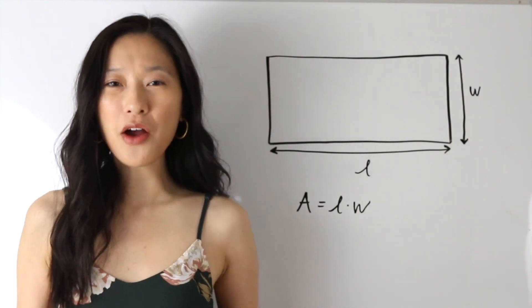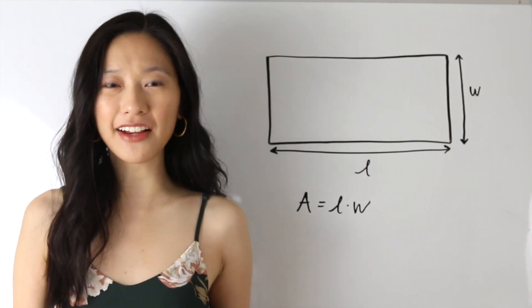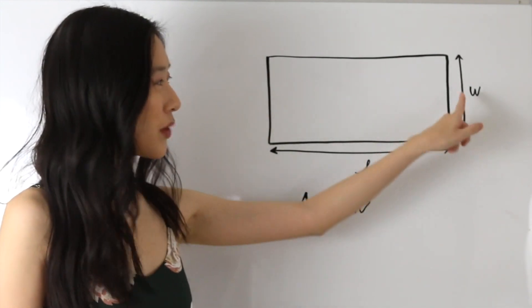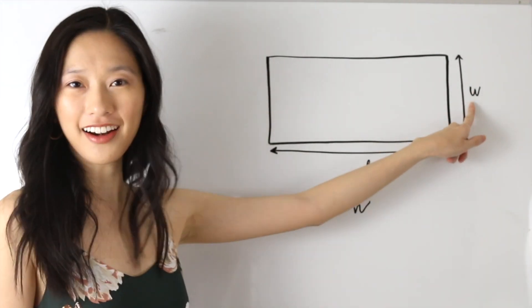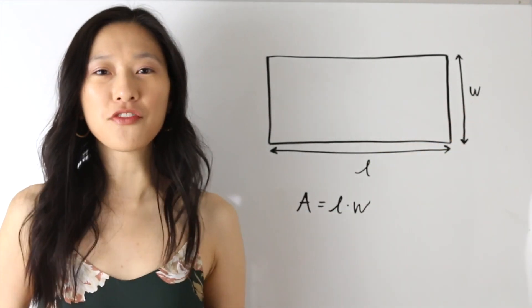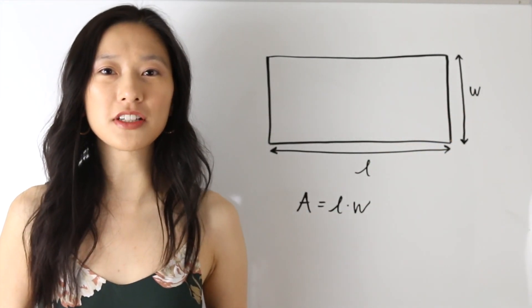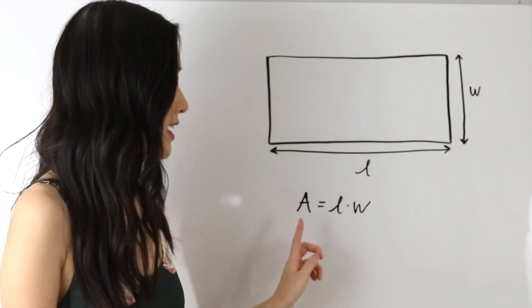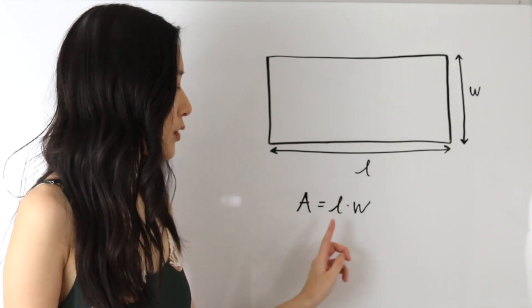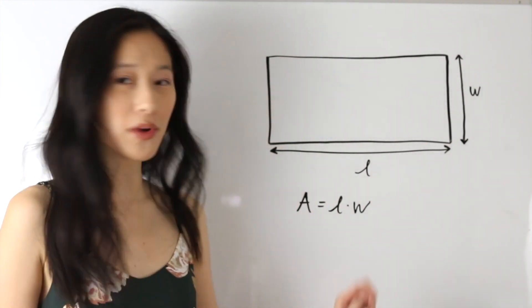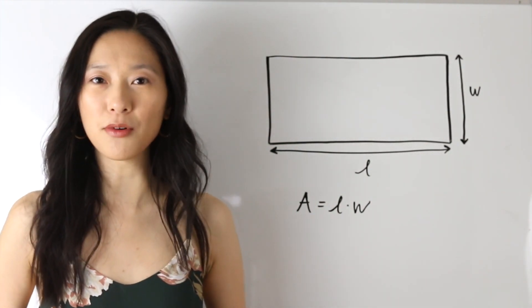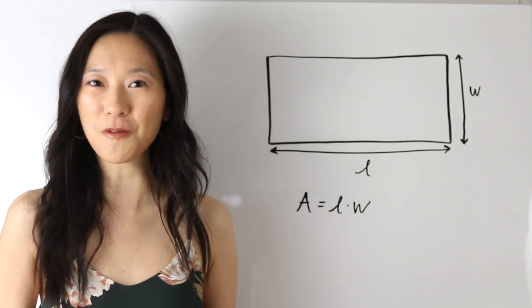So here we have a rectangle and we have the length labeled here and the width over here. The formula to determine the area of a rectangle is area is equal to length times width. So let's go ahead and look at an example so we can apply this formula.